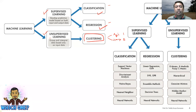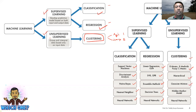There are many machine learning algorithms to select from. For classification, you can use SVM, discriminant analysis, naive Bayes, nearest neighbors, and neural networks. For regression, you can use linear regression, SVR, GPR, ensemble methods, decision trees, and neural networks. For clustering (unsupervised learning), you can use K-means, fuzzy C-means, hierarchical methods, Gaussian mixture models, hidden Markov models, and neural networks.